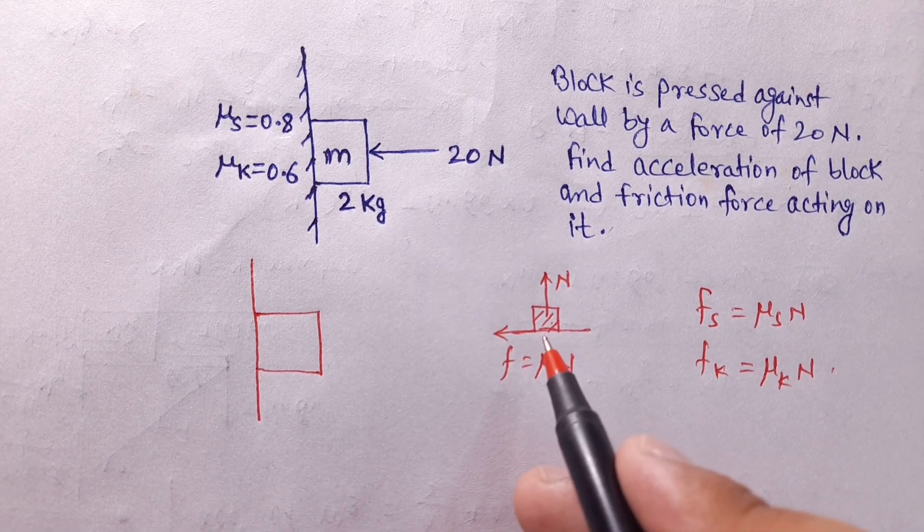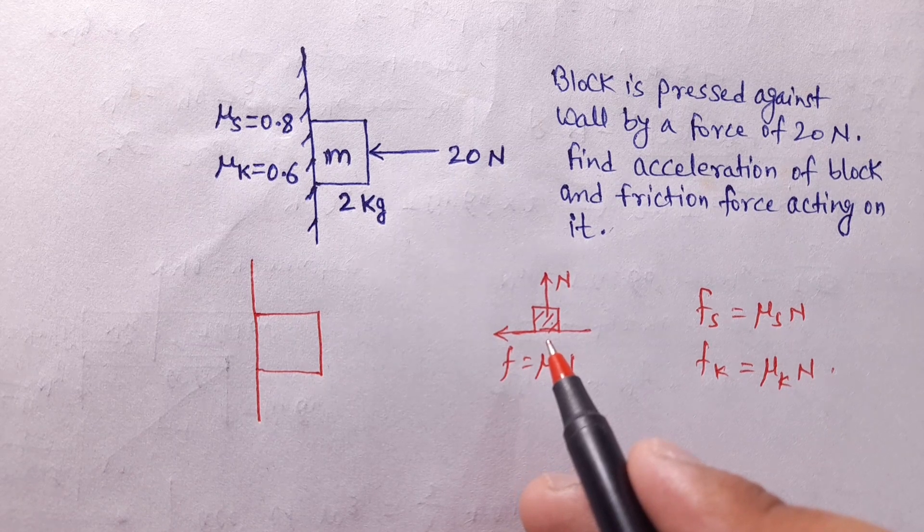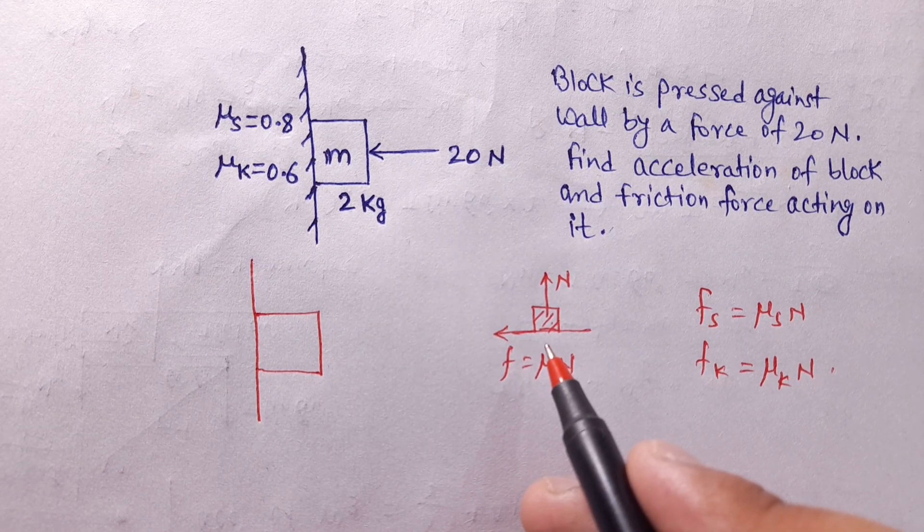The normal reaction can be different in different situations because it depends on the body's position and the direction of the normal reaction.